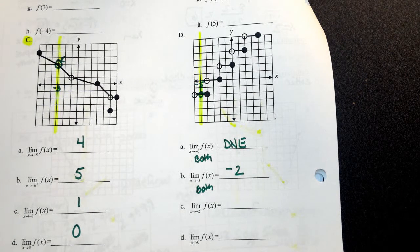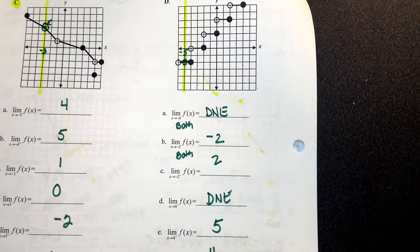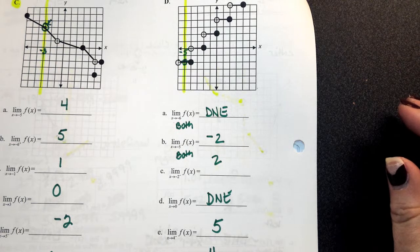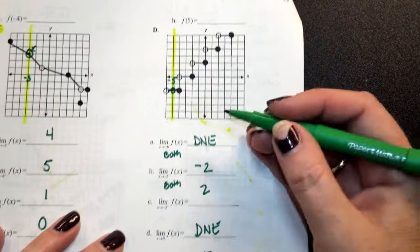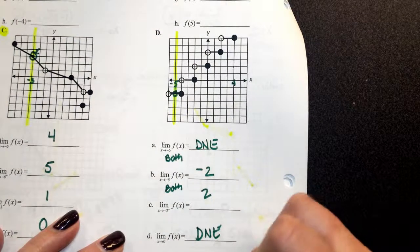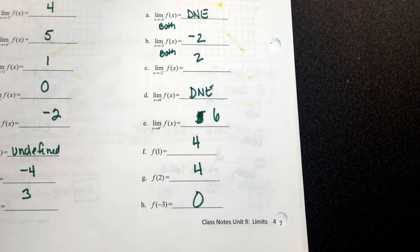The answers: C is 2, D is DNE, E is 5. For F, G, and H, you should have 4, 4, and 0. Any questions on finding those limits using a graph?